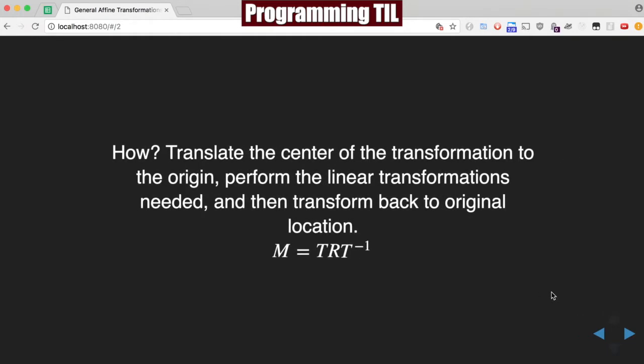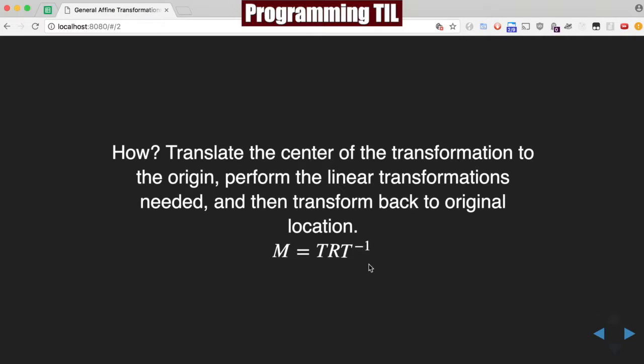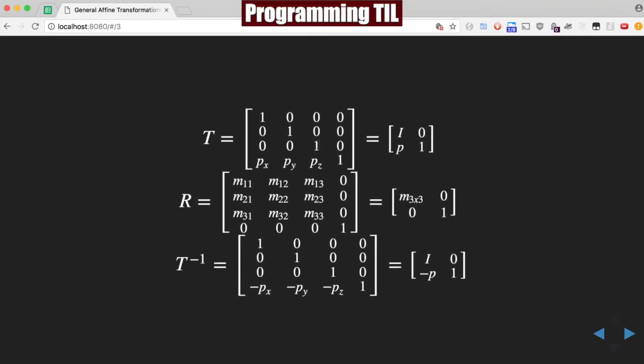So how do we do this? Well, what we're going to do is we're going to translate away from, to the center of the origin, perform our linear transformations, and then translate back. So we have a matrix here, translation times rotation or whatever transformation we want, and then the inverse back.